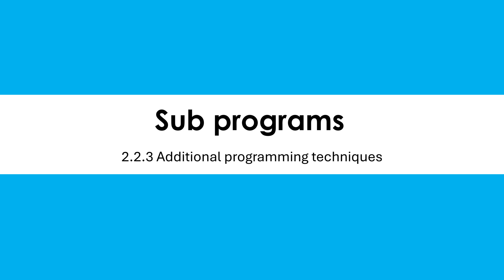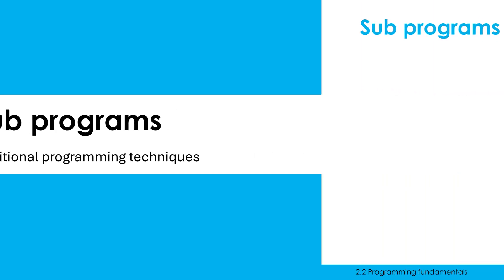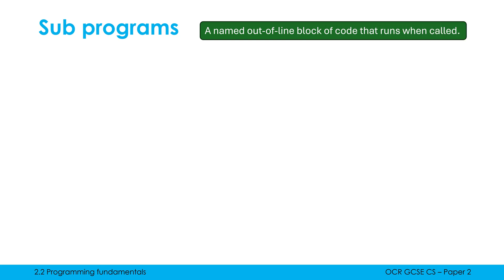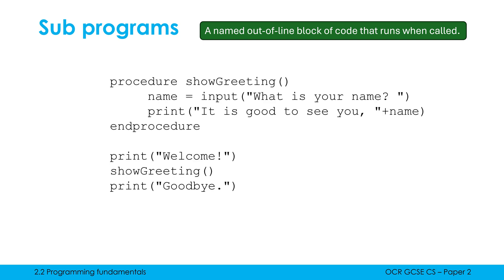Let's start by defining subprogram, because that is our overriding term which we have to get our head around. A subprogram is a named out-of-line block of code that runs when called. If this is still fairly new to you, that won't make any sense at all — even if you do understand what these are, it might still be a little bit confusing. Let's break down what that definition actually means with some code.